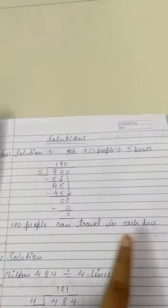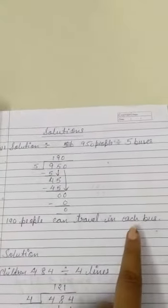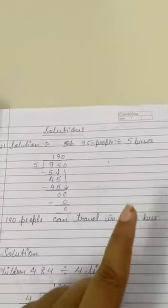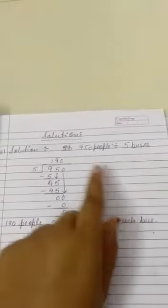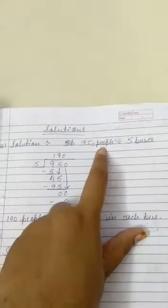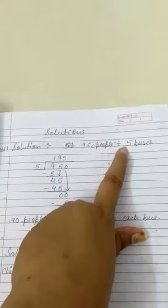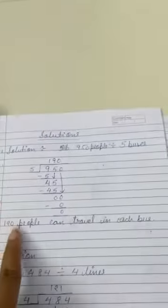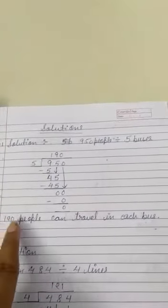So the answer is 190. The remainder is also zero. Now you got 190. What is this? This is the number of people who can travel in each bus. It means 190 people can travel in each bus.